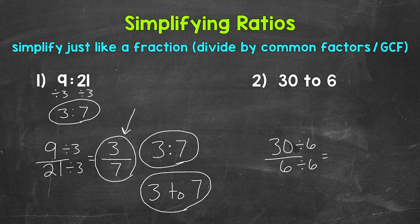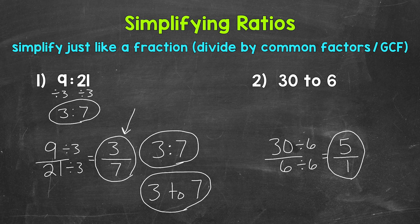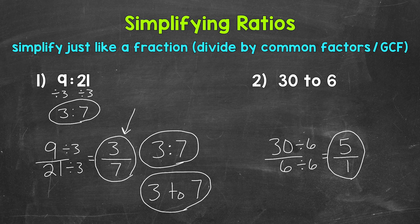30 divided by 6 is 5. 6 divided by 6 is 1. The greatest common factor between 5 and 1 is 1. So this is our simplified ratio, 5 to 1. Now, that is an improper fraction. But we want to leave it as an improper fraction because this is a ratio. A ratio compares and shows the relationship between two quantities or numbers. So again, let's leave it as an improper fraction. So we have those two numbers that are being compared.